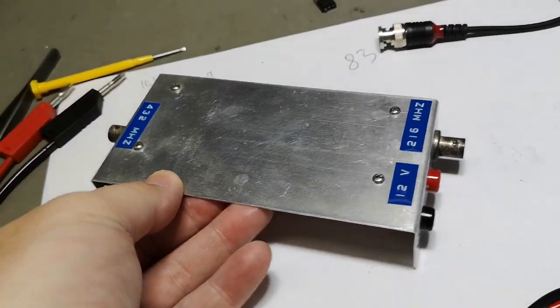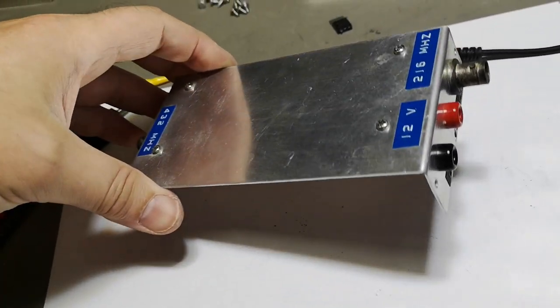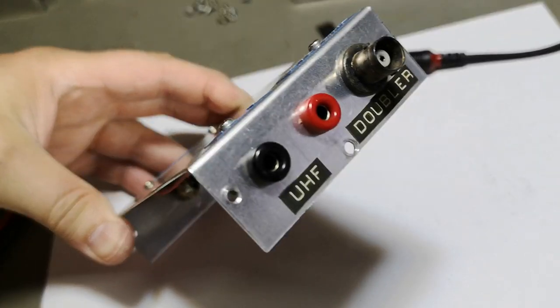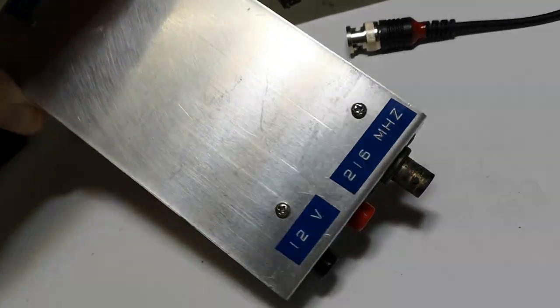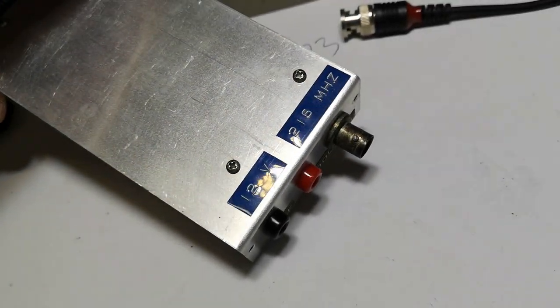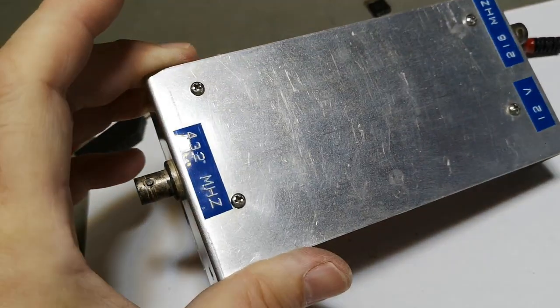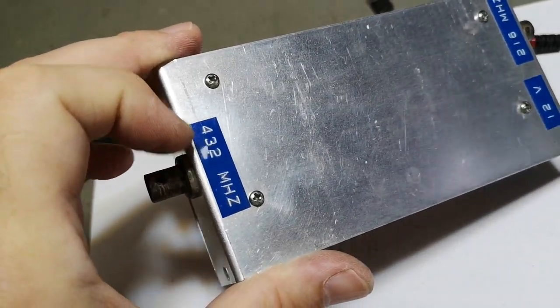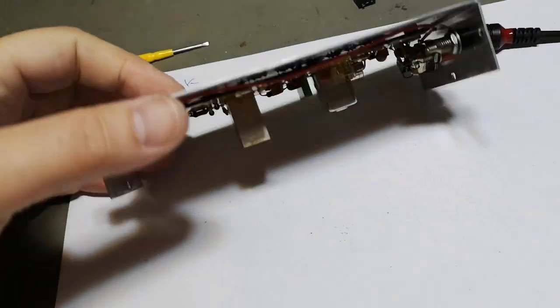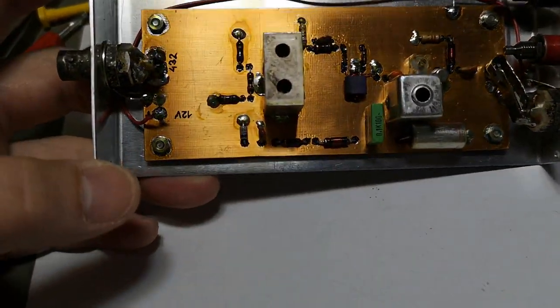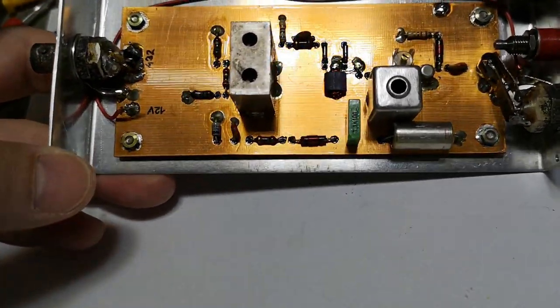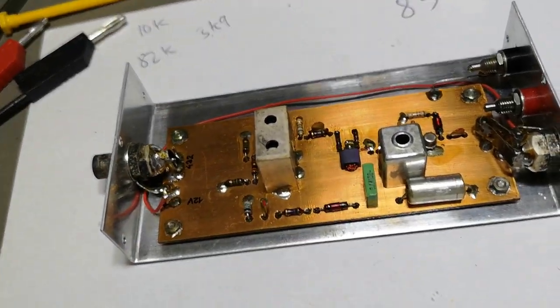This is the last box in this video, and this is a UHF doubler. The input frequency is 216 and the output is 432. This is very very beautiful. Now everything here is made the other way around.